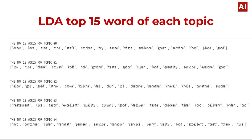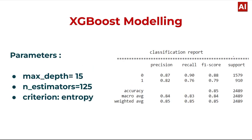LDA — Linear Discriminant Analysis: The top 15 words for each topic include: order, love, time, nice, staff, chicken, dry, taste, visit, ambience, great, servings, food, place, good, etc. Topics are labeled zero through four. For the decision tree (ExtraBoost modeling), model parameters are max depth = 15, n_estimators = 125, and criterion = entropy.